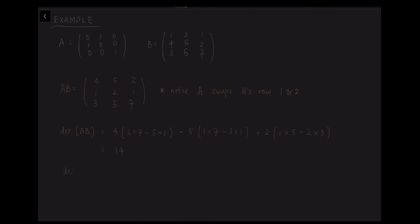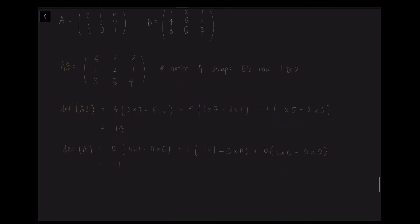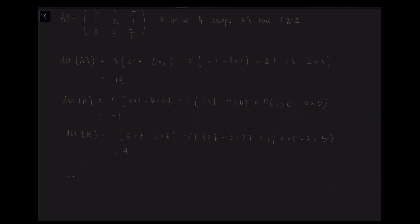Now we are going to calculate the determinant of A. So same method: 0 times (0 times 1 minus 0 times 0) minus 1 times (1 times 1 minus 0 times 0) plus 0 times (1 times 0 minus 0 times 0) which is minus 1. And now the determinant of B is 1 times (5 times 7 minus 5 times 2) minus 2 times (4 times 7 minus 3 times 2) plus 1 times (4 times 5 minus 3 times 5). And we get negative 14 as our answer.